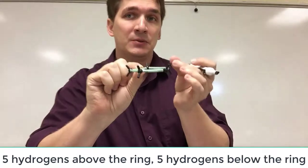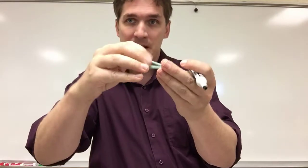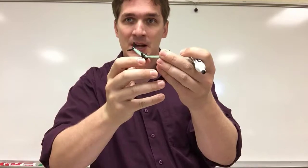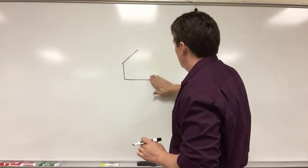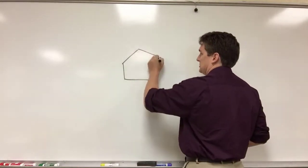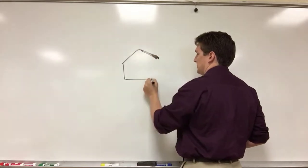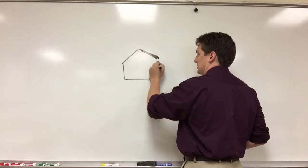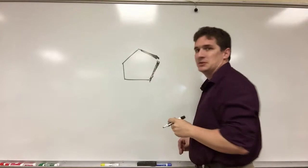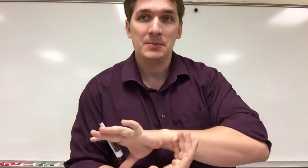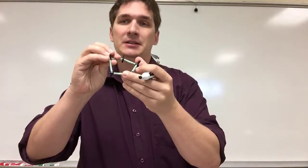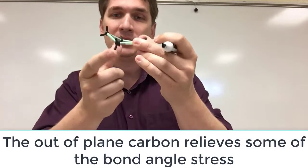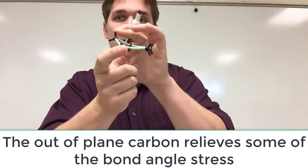Now there are also two options for relieving this ring strain. The first is to create what's called the envelope conformation. So in the envelope conformation, we have one of the carbons actually puckered out of the ring. So if we were to draw that, representing the stereochemistry, we'd have a wedge going up and a wedge going up. In the envelope conformation, we relieve a little bit of the stress by basically creating what looks like closer to a tetrahedral for the two atoms connected to the puckered up atom.